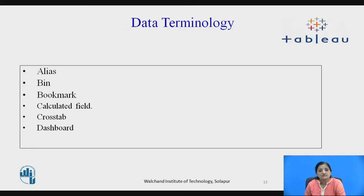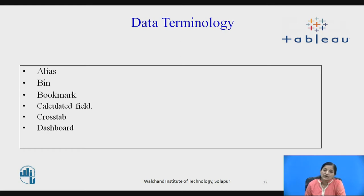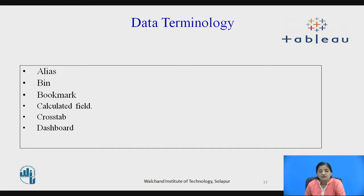Now let's look at some of the data terminologies used in Tableau. Alias is an alternative name that can be assigned to fields or dimension members. Bin is a user-defined grouping of measures in the data source. Bookmark is a file with extension .tbm in the bookmarks folder in the Tableau repository, similar to a web browser bookmark, and it helps to quickly display different analyses.